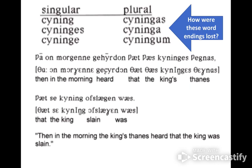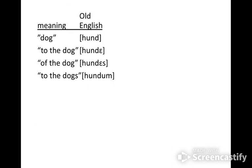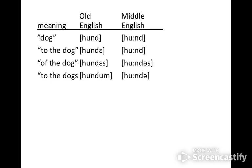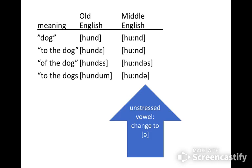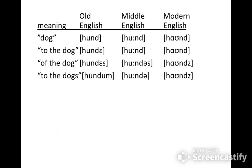Now, how did these endings get lost? This is part of the reason why we end up with more fixed word order in present-day English. There was this completely unrelated process: take 'dog' as an example — 'hund,' 'hunde,' 'hundes,' 'hundum' in Old English were some of the possibilities. In Middle English, they become 'hund,' 'hund,' 'hundes,' 'hundah.' What happened is the unstressed vowel at or near the end of a word changes to a little 'uh' sound or gets lost altogether — 'hundes' to 'hundas,' 'hundum' to 'hundah,' or the ending gets dropped altogether. This is how in Modern English we end up with just 'hound' or 'hounds' — those are the only forms left.